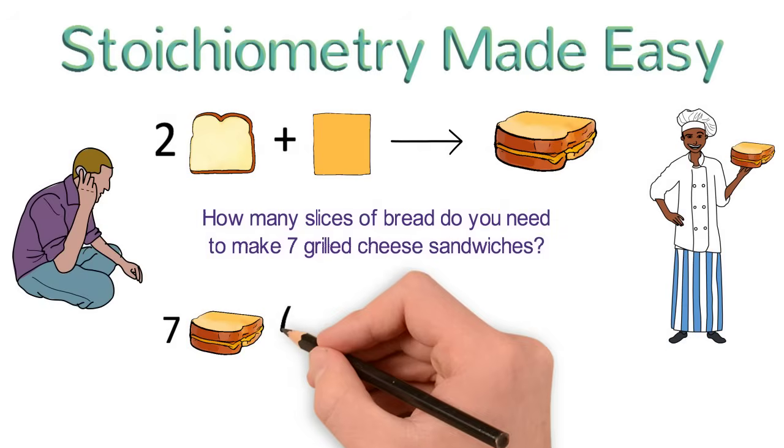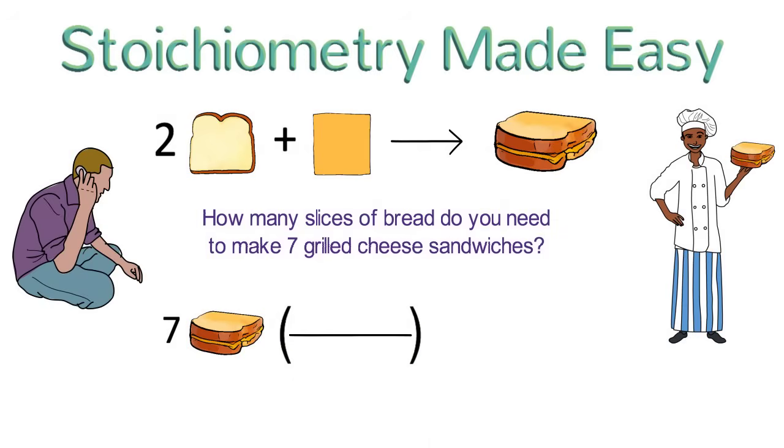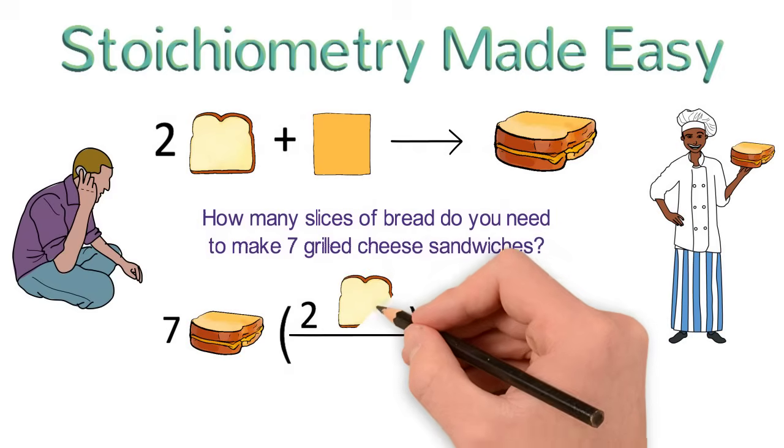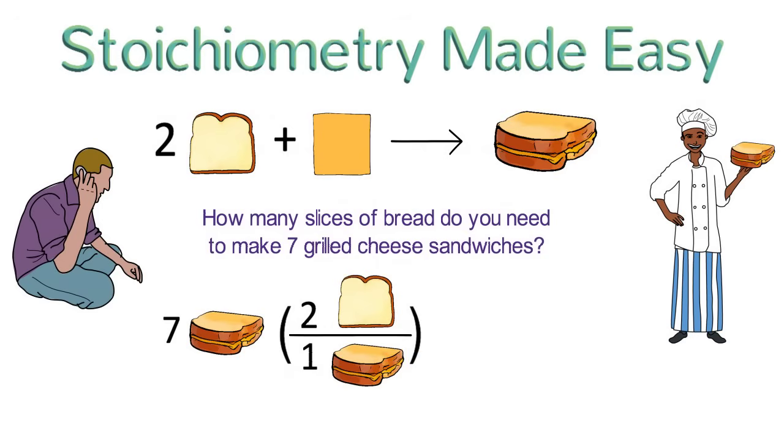we are going to multiply this by the ratio of bread to sandwiches. You need two slices of bread to make one sandwich. Where did I get those numbers? The recipe, or the balanced equation, tells us the ratio of the ingredients and products. Bread and sandwiches are in a two to one ratio.